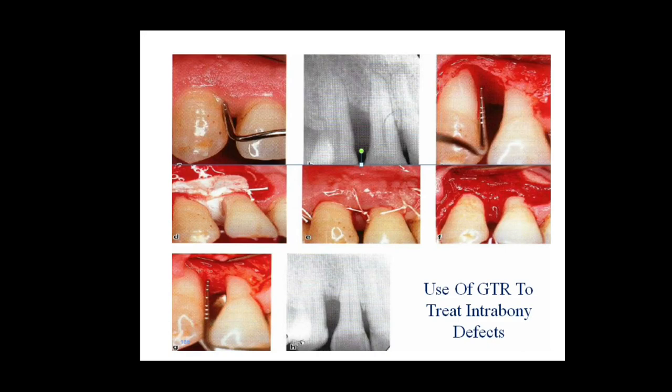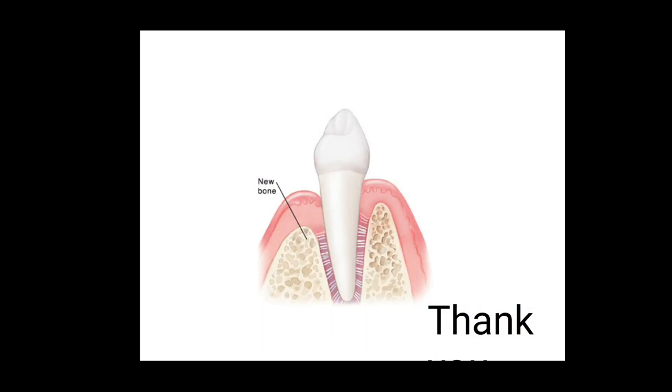So to conclude, GTR or guided tissue regeneration is the method for the prevention of epithelial migration along the root wall of the pocket and maintaining space for clot stabilization. Hope the concept of GTR is clear. Thank you.